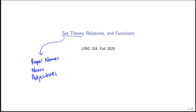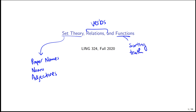Next week we'll talk about relations and functions. Relations are going to let us talk about verbs — the connection between the subject and the object in a sentence. Functions are going to be a way of sorting, or we can think of functions as giving us truth: is that sentence true or false? Functions are going to let us do that.